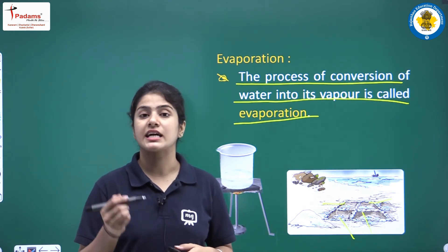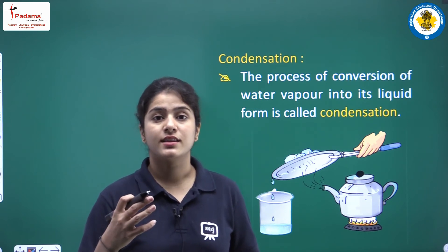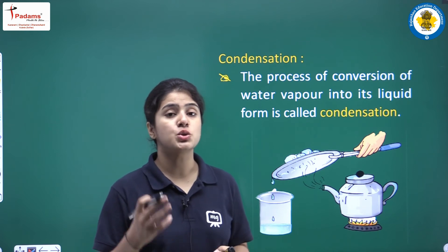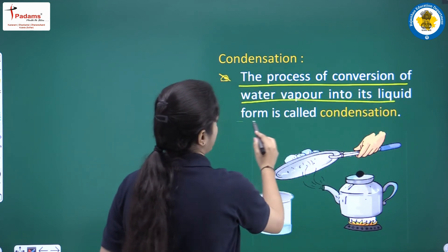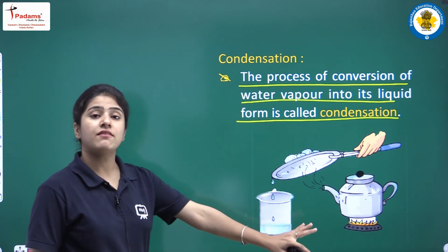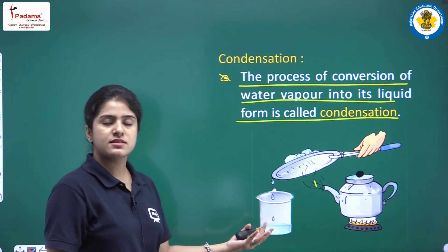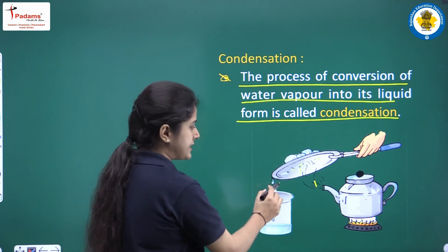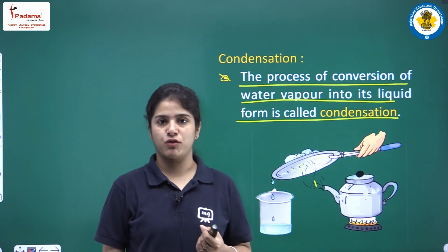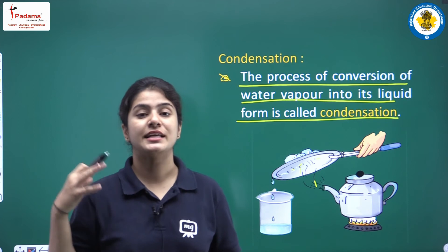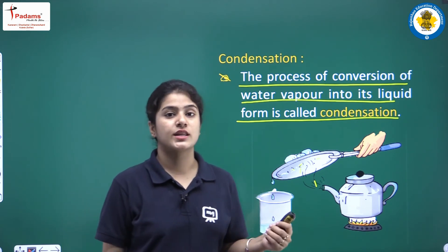Now we will discuss the next process called condensation. Condensation is the process in which vapors are converted into liquid. The process of conversion of water vapors into its liquid form is called condensation. In the picture, steam is coming out in the form of vapors, and when you place a tilted plate over it, the vapors convert into liquid form. So the process in which vapors are converted into liquid form is called condensation.